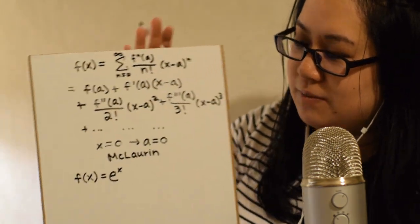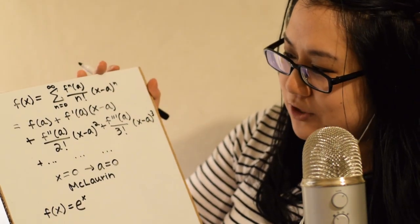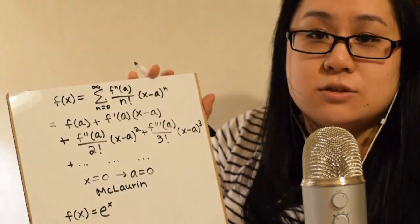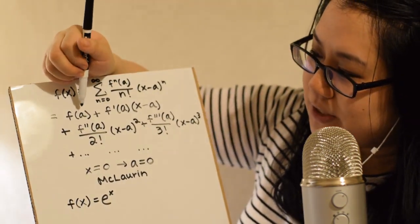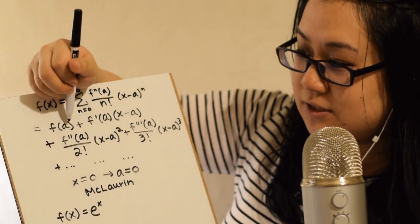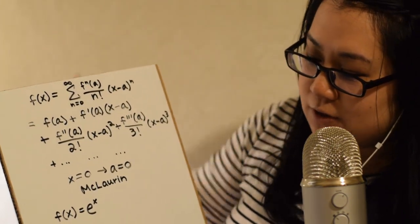Let's work out a cute little example: f of x equals e to the x. I know it might seem like a weird one at first, but there's a reason I'm doing this one first. We'll find the Maclaurin expansion, so a is zero. f of zero is e to the zero, which is one — anything to the zero power is just one.